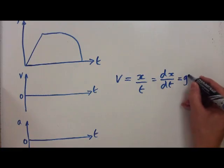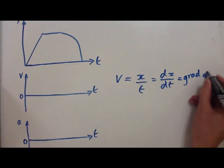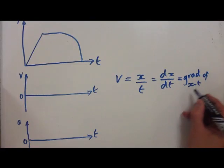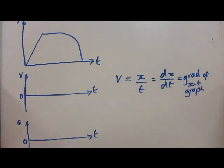Well, that equals the gradient of the xt graph. So the velocity is the gradient of the xt graph. Let's have a look at this xt graph.